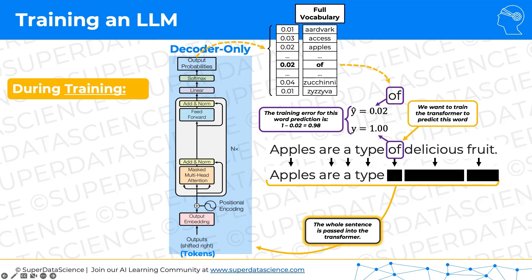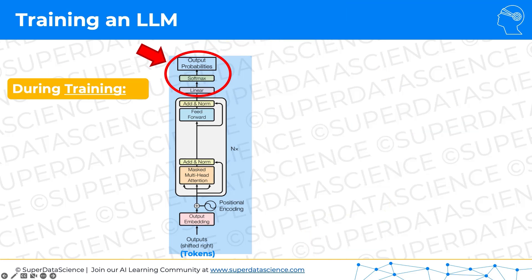These words — all seven words, 'apples are a type of delicious fruit' — are passed into the large language model altogether. What happens after that is they go through the transformer. So let's discuss this last part. There's our architecture. As we know, these seven words go through the transformer in parallel.